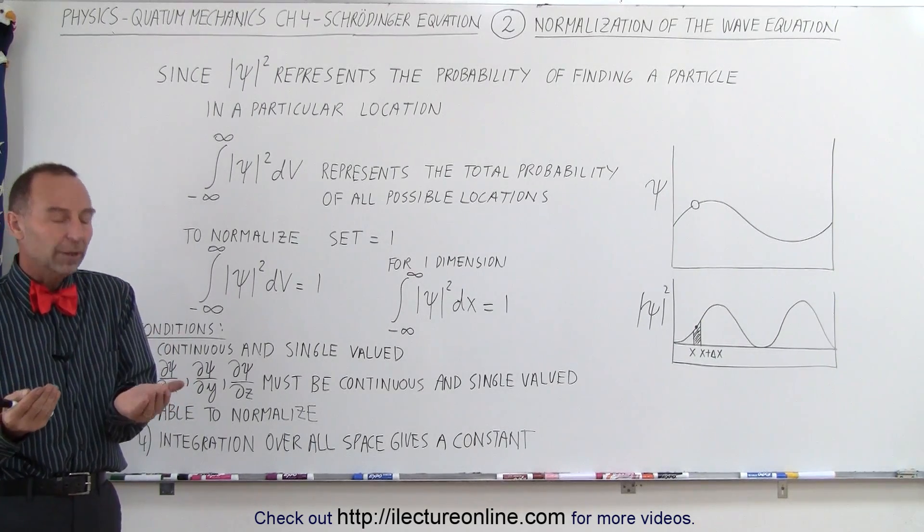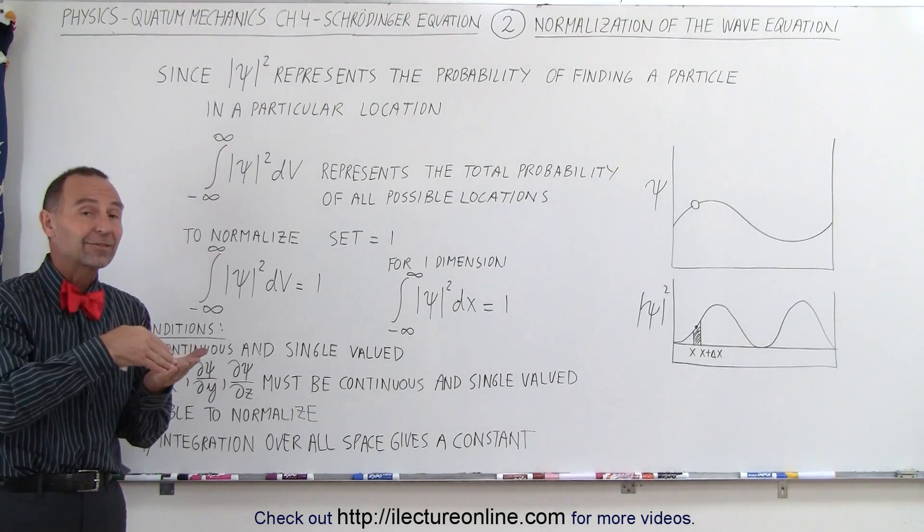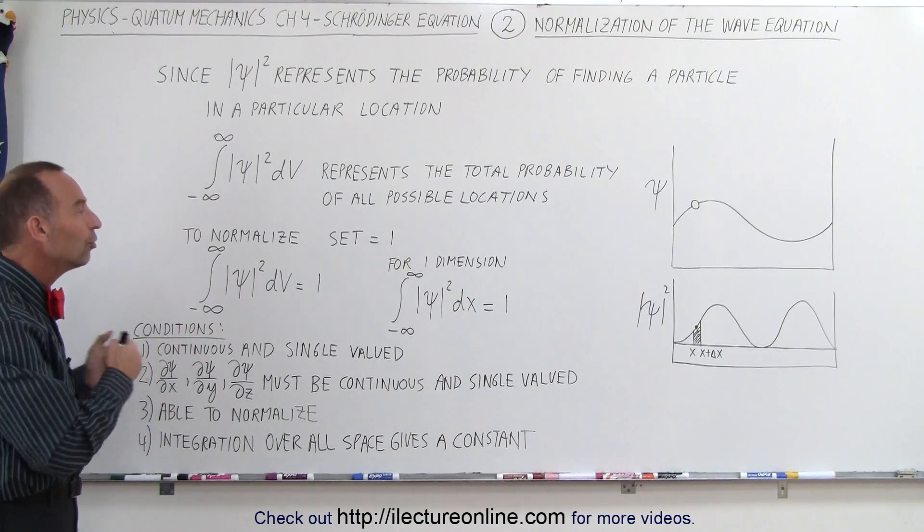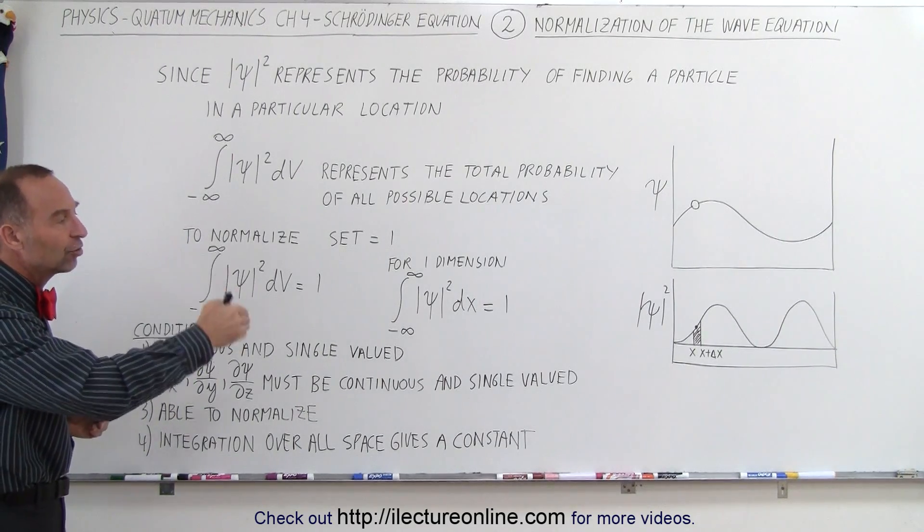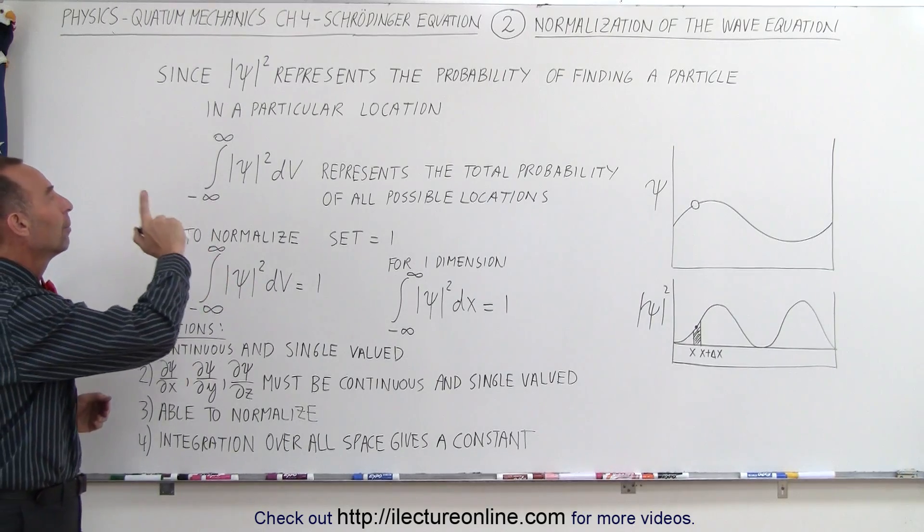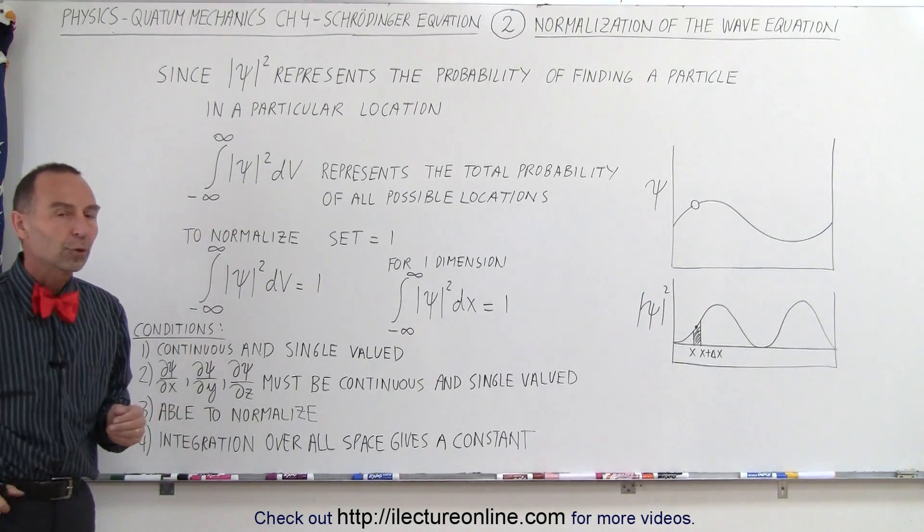Just like a function in algebra, when you plug in a certain value for x, you cannot have two values for y. It's no different here. For every position in x, there can only be one specific value for the wave function.